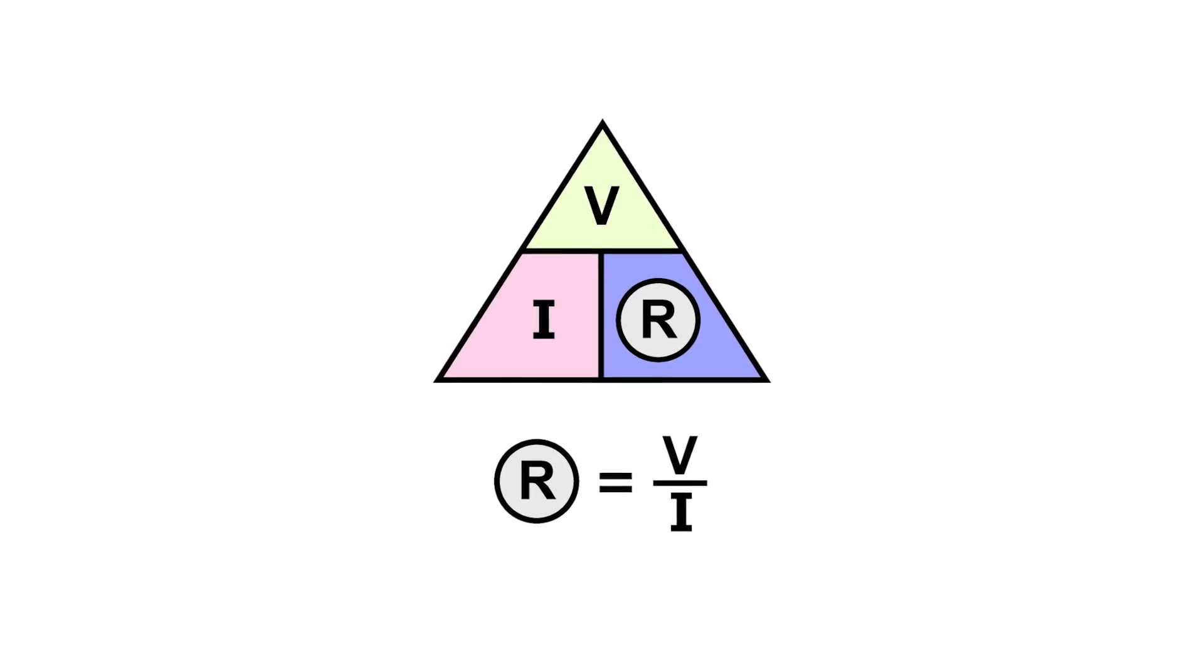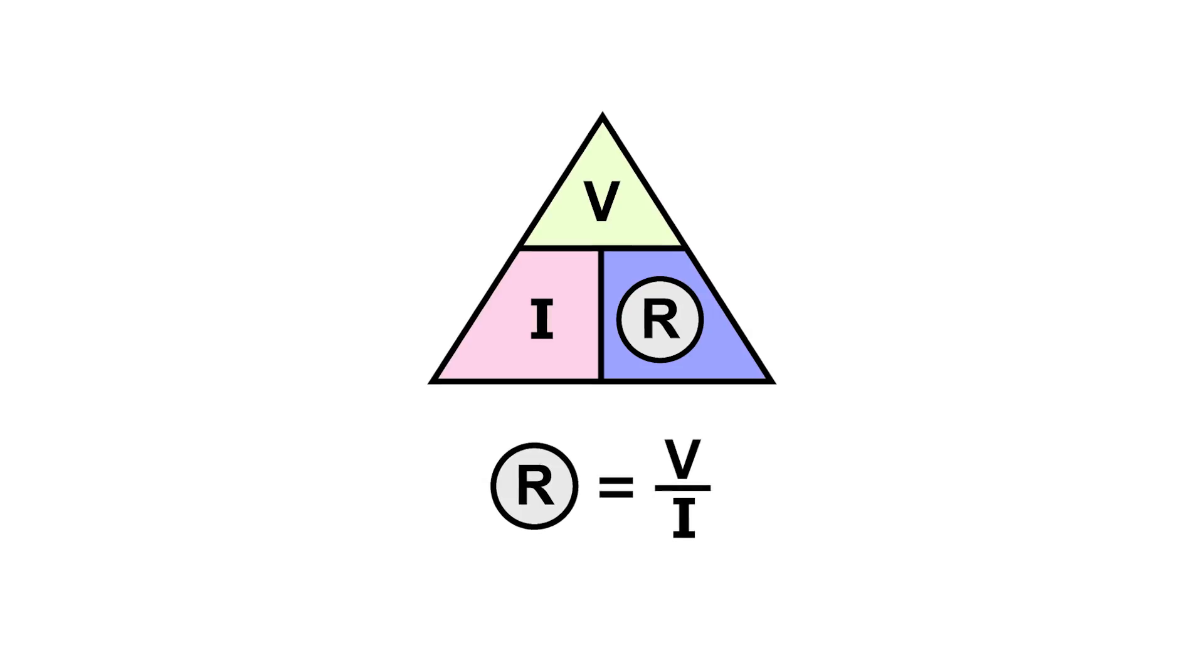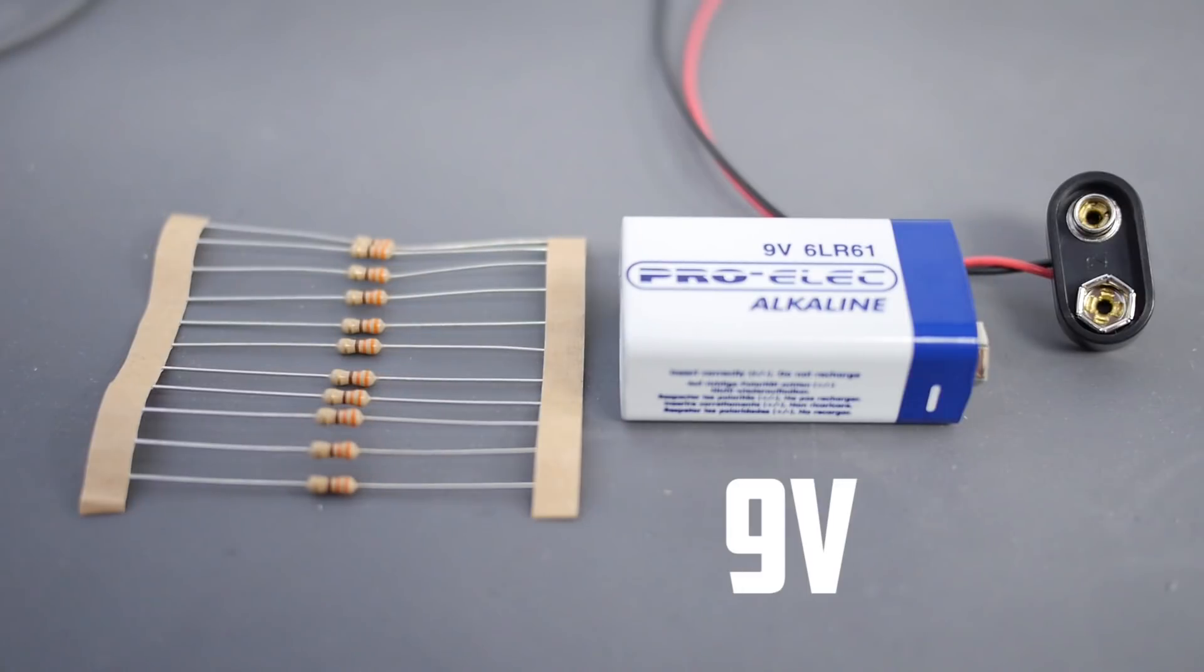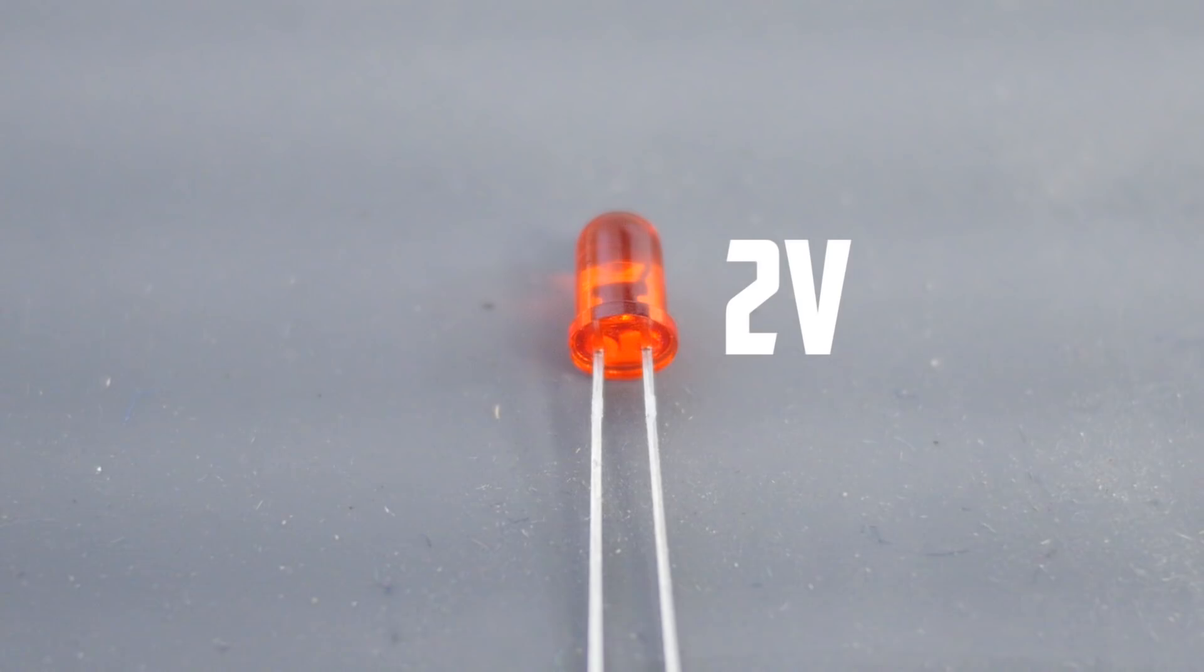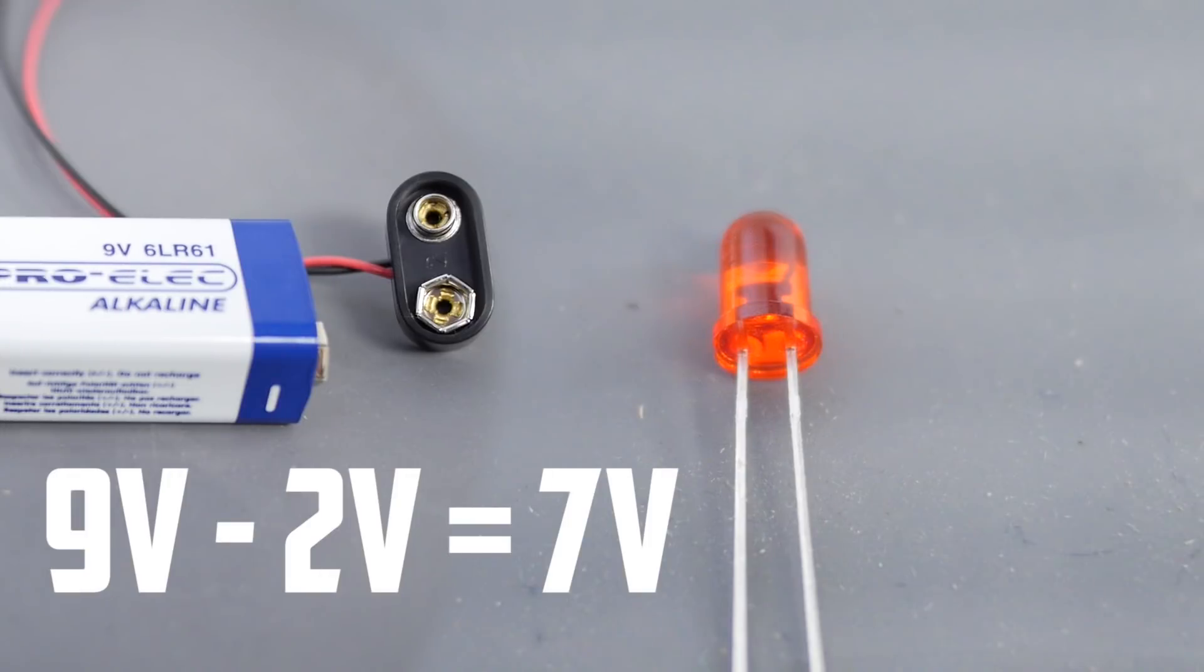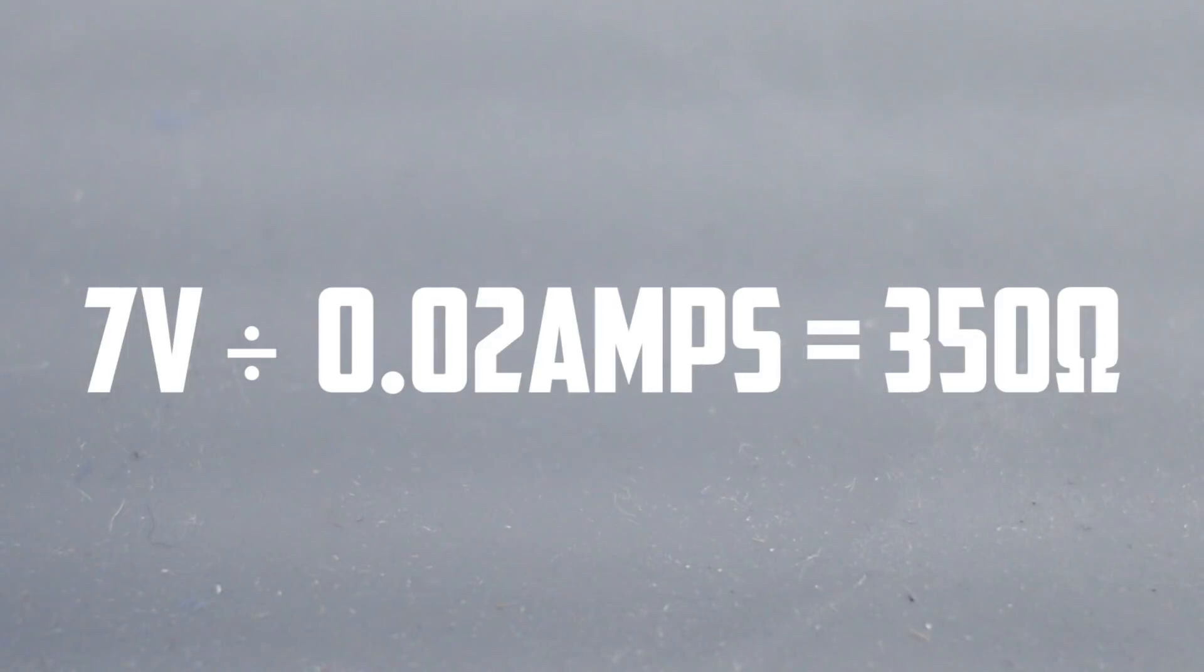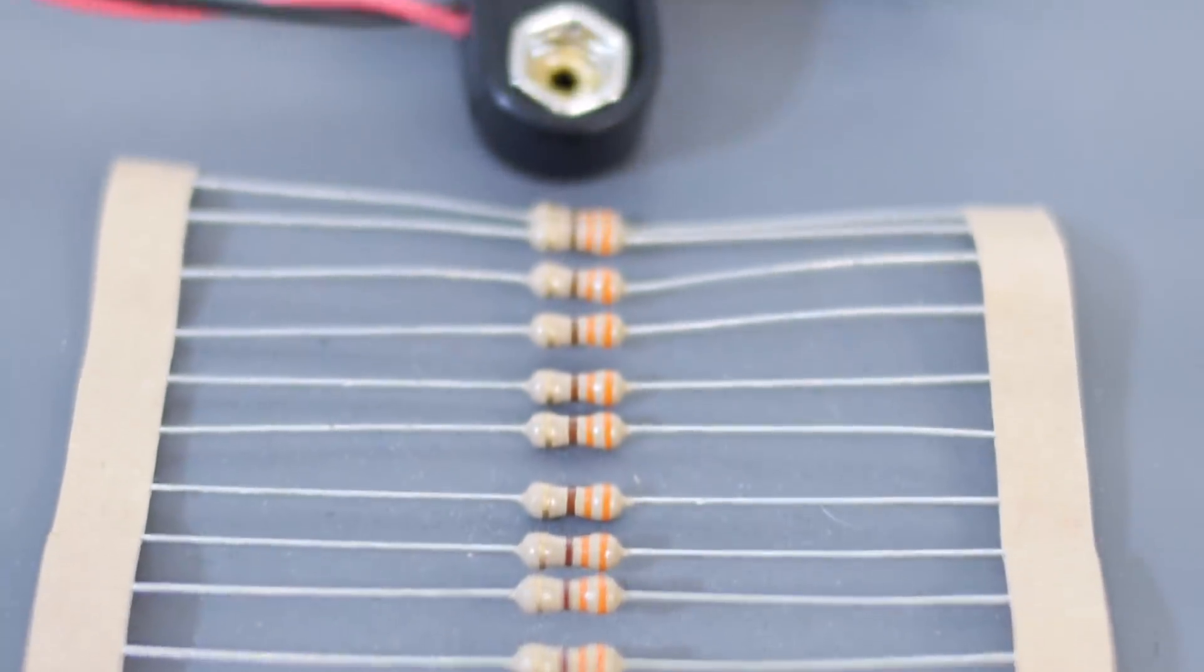To find resistance, we can use the equation found in Ohm's law. Resistance equals voltage divided by current. Let's start with our 9 volt battery. We have 9 volts and our LED wants approximately 2 volts, so that's a difference of 7 volts. We want to divide that by the desired amperage of the LED, so that's 7 divided by 0.02 amps. That equals 350, so we're going to want a resistor close to or exactly 350 ohms. Well, I don't have any 350 ohm resistors, so I'm going to grab the closest value I have, which is 330 ohms.